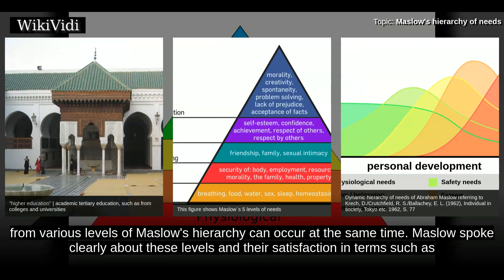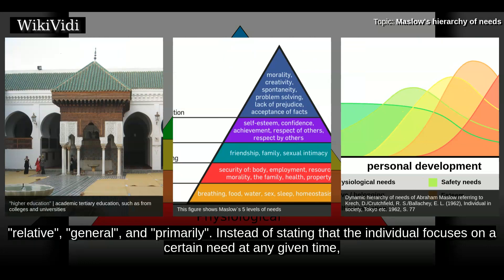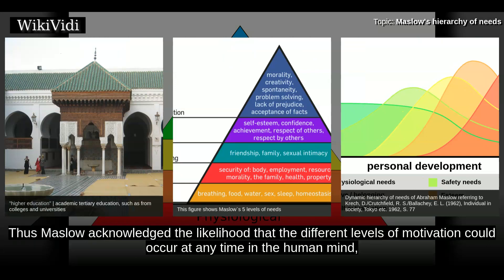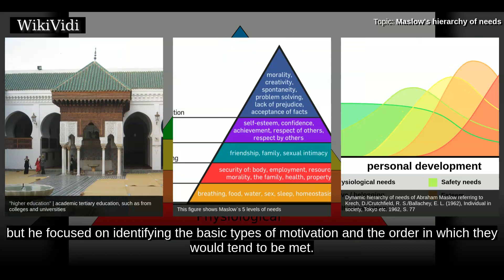Maslow spoke clearly about these levels and their satisfaction in terms such as relative, general, and primarily. Instead of stating that the individual focuses on a certain need at any given time, Maslow stated that a certain need dominates the human organism. Thus Maslow acknowledged the likelihood that different levels of motivation could occur at any time in the human mind, but he focused on identifying the basic types of motivation and the order in which they would tend to be met.